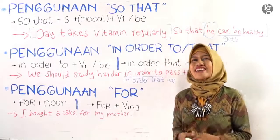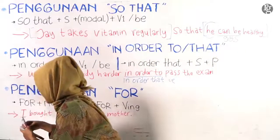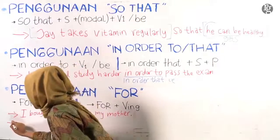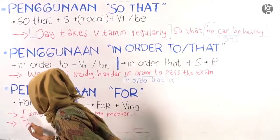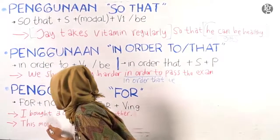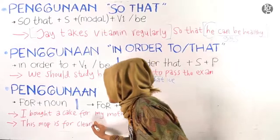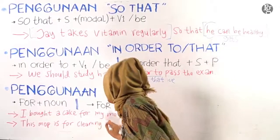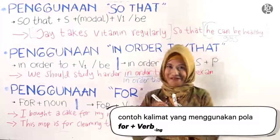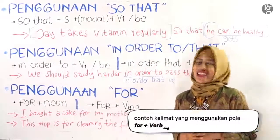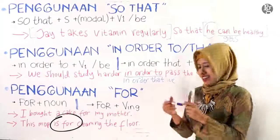Gimana dengan bentuk yang selanjutnya? Yaitu bentuk 'for' diikuti dengan verb -ing. Kakak akan tulis kembali contohnya: This mop is for cleaning the floor. Jadi, kain pel ini digunakan untuk membersihkan lantai.